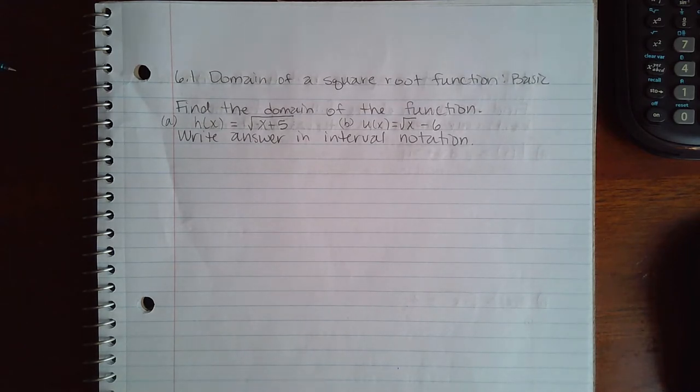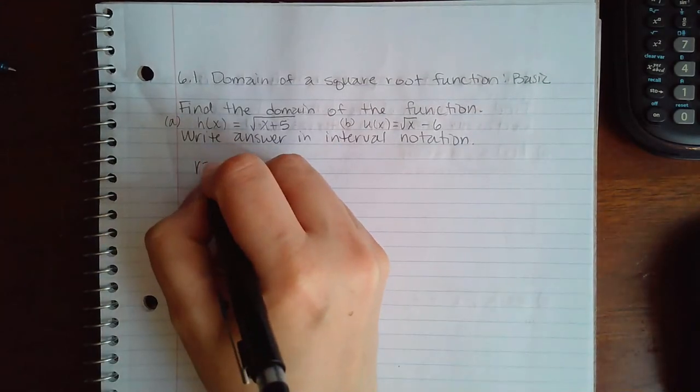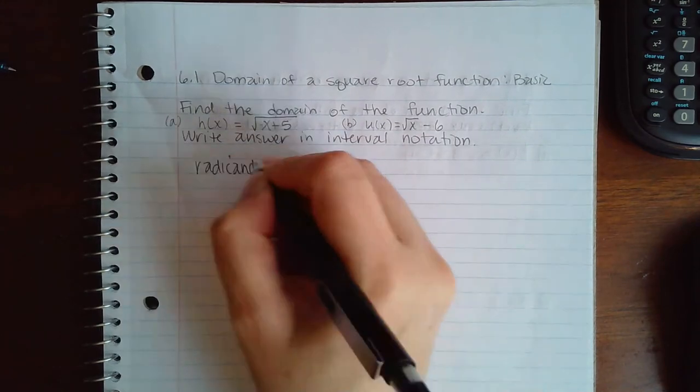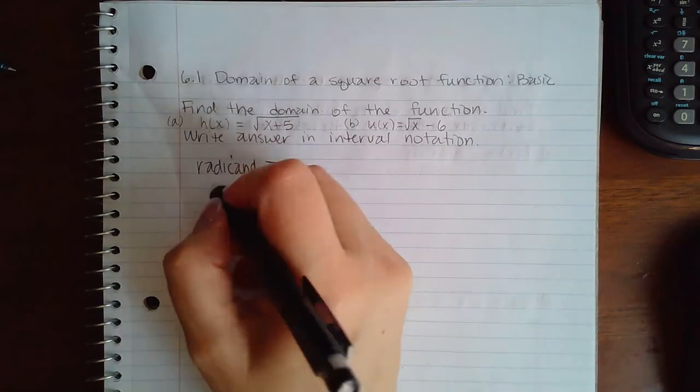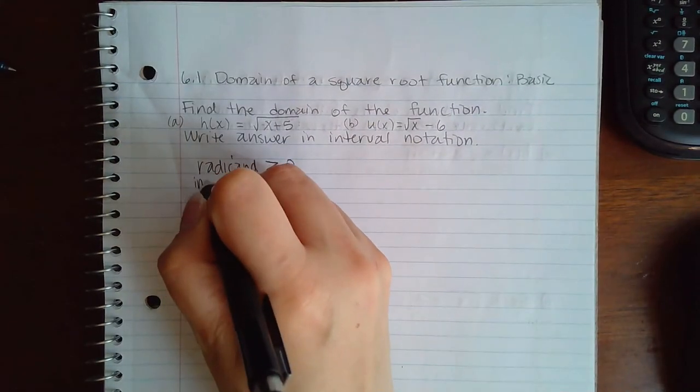For now, if you have a fraction you know that the denominator cannot equal zero. For a square root, you know that the radicand must be greater than or equal to zero. Radicand is just a fancy word for inside the square root.